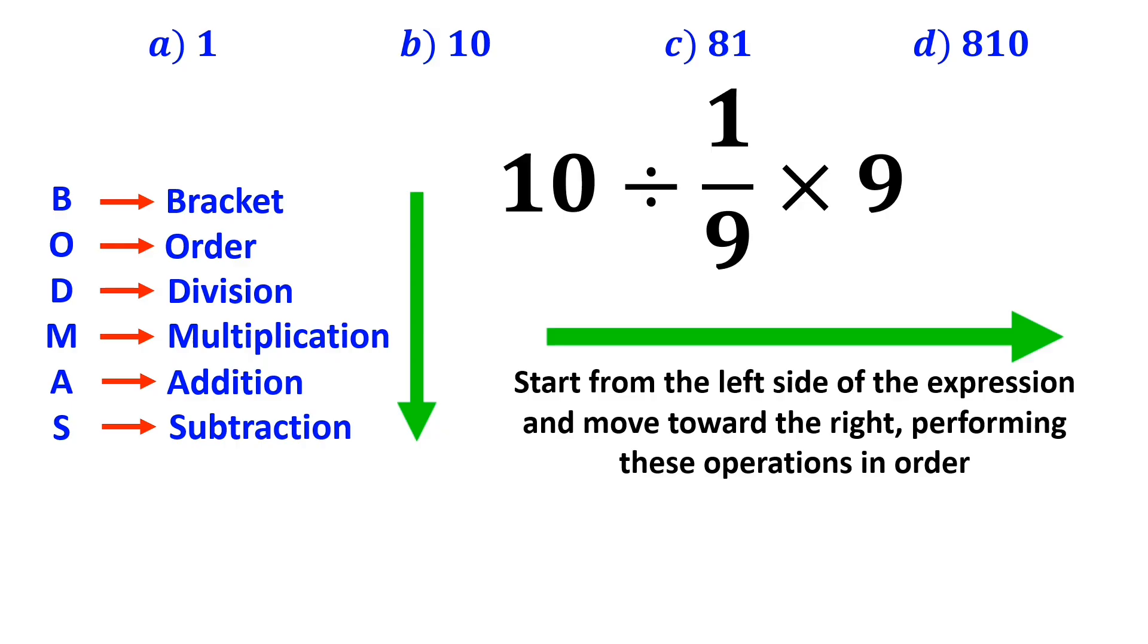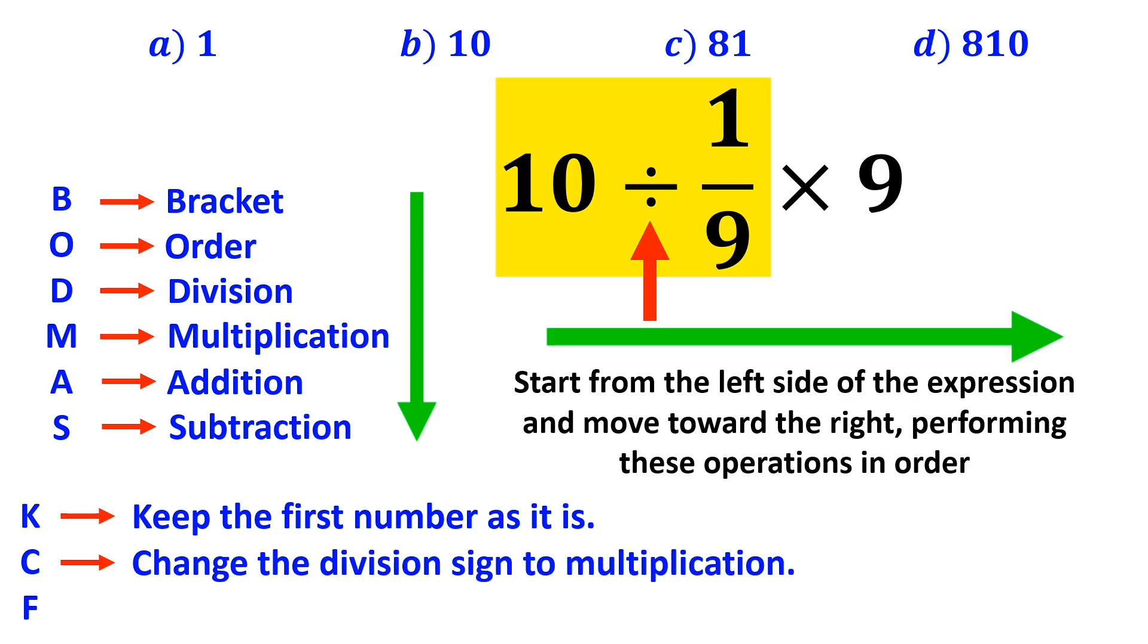So, first we perform the division between 10 and 1 over 9. Whenever we see a division sign between two terms, it's best to use the KCF rule. In this rule, K means keep the first number as it is, C means change the division sign to multiplication, and F means flip the second fraction.